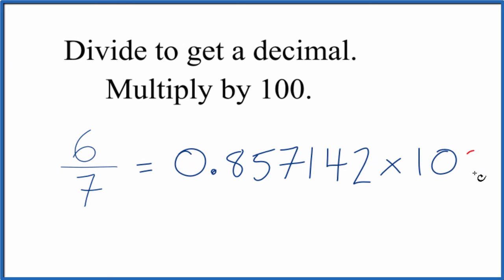Multiply that by 100 and we end up with 85.71%. So the fraction 6/7, that's equal to 85.71% or very close. That means that 6 is 85.71% of 7.